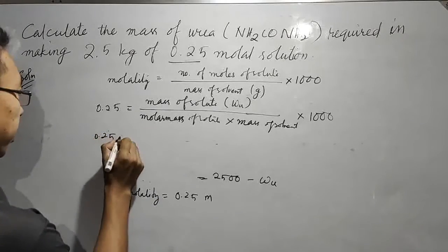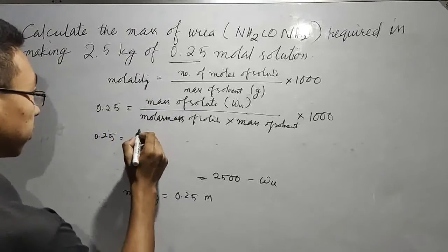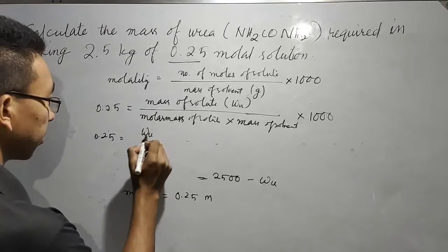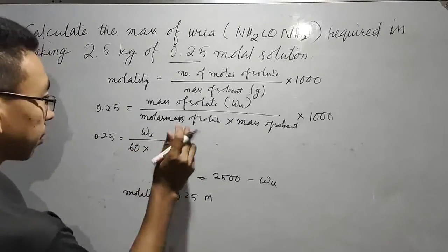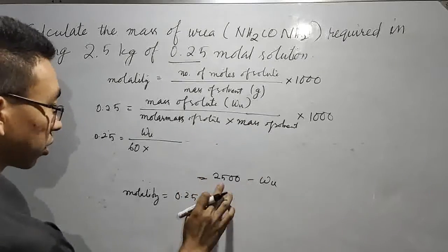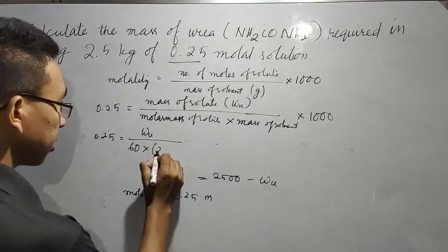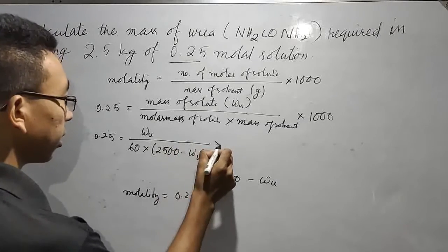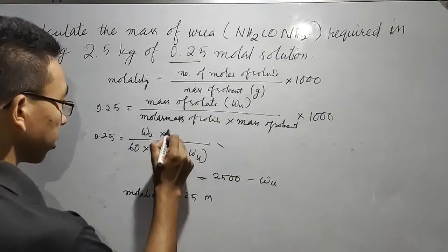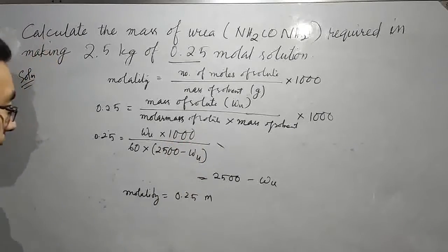0.25 equals mass of solute, which we need to find out, so W_u divided by molar mass 60, multiplied by mass of solvent, which is 2,500 minus W_u, and multiply by 1,000.